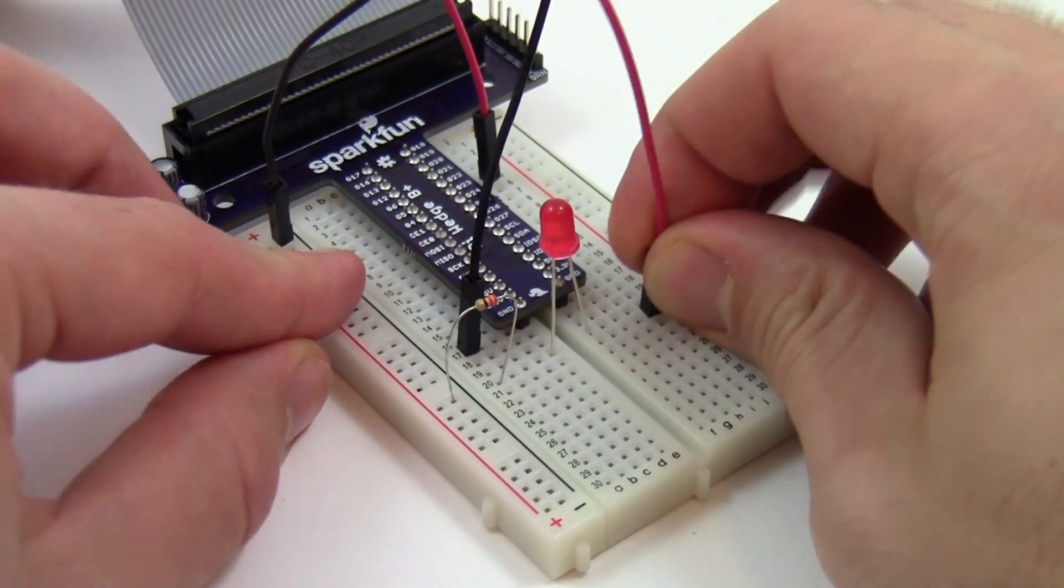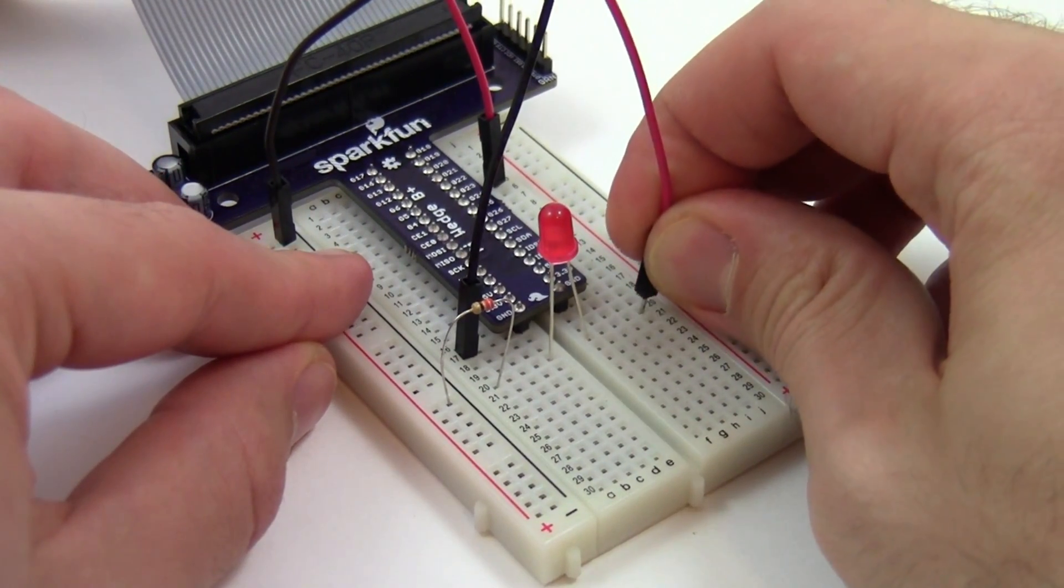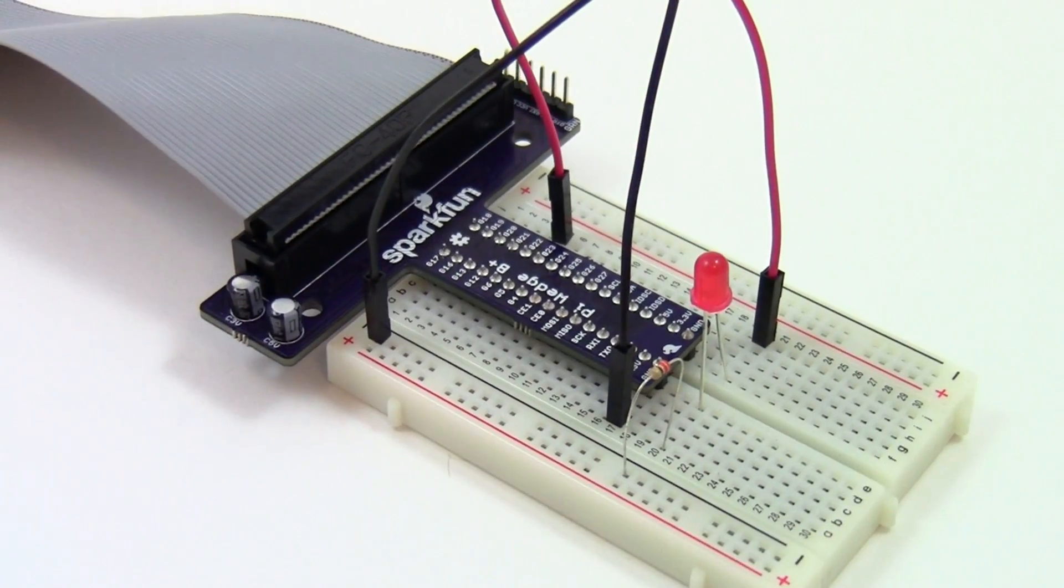So here, to get things working again, all I have to do is take my jumper wire and put it back in row 20, which is the same row as the LED.